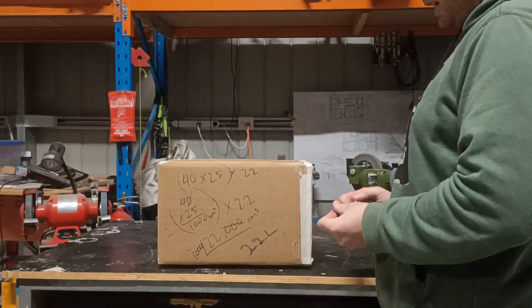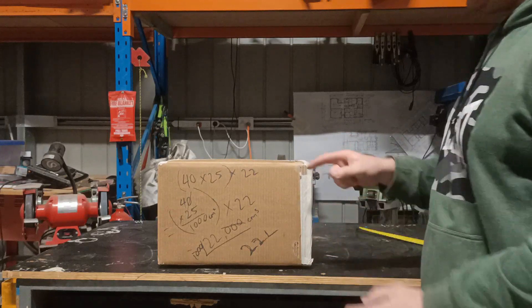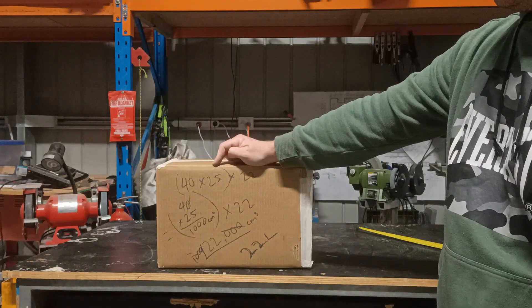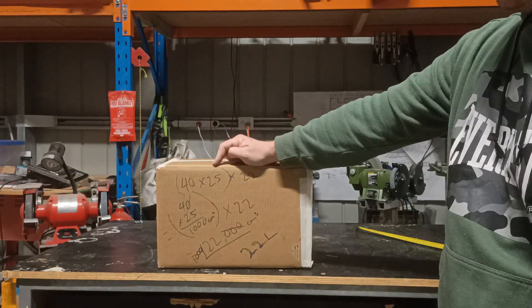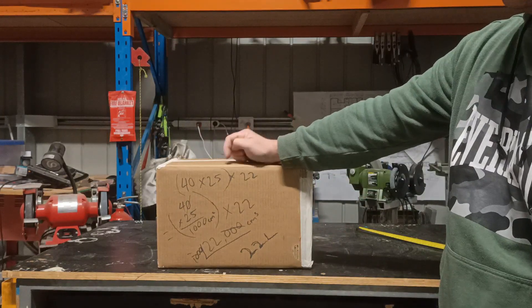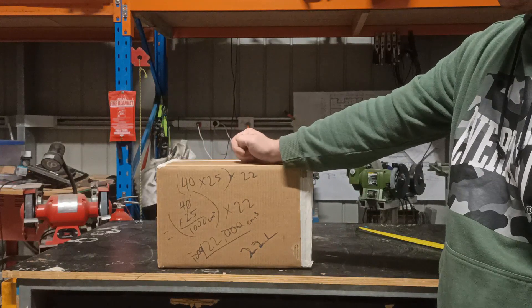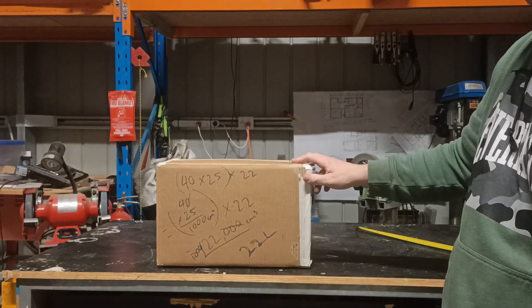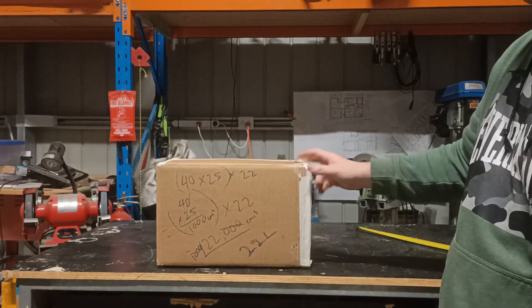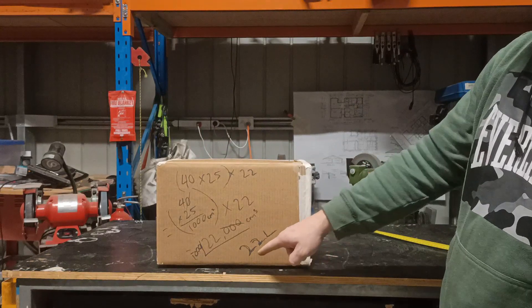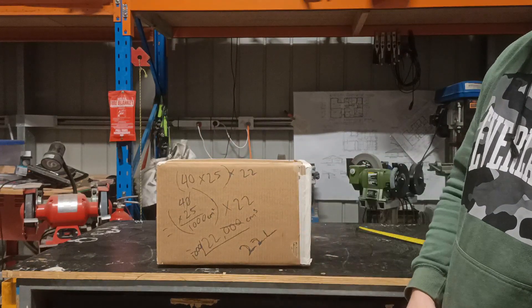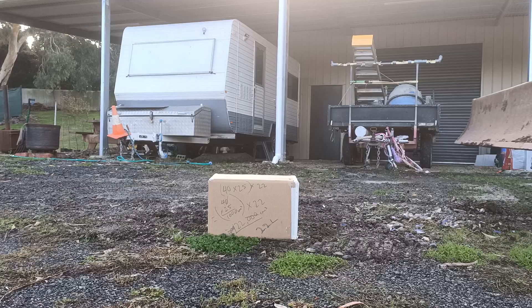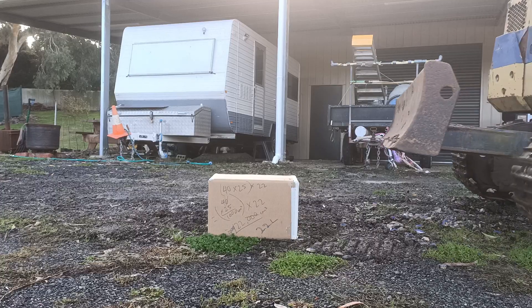Now this cardboard box — 40 centimetres wide, 25 centimetres long and 22 centimetres high — has a volume of 22 litres.